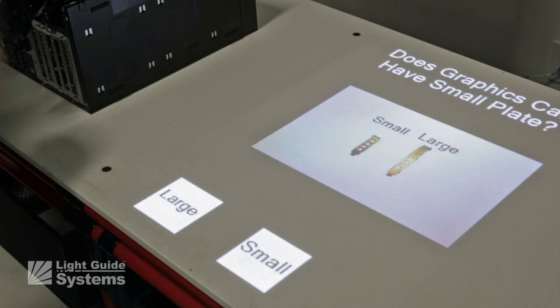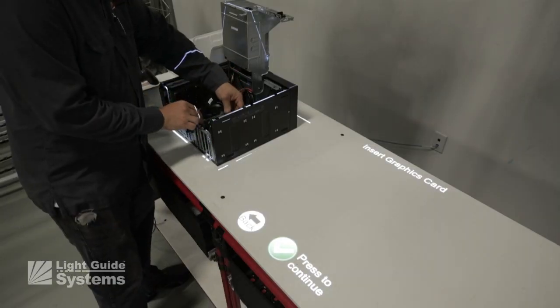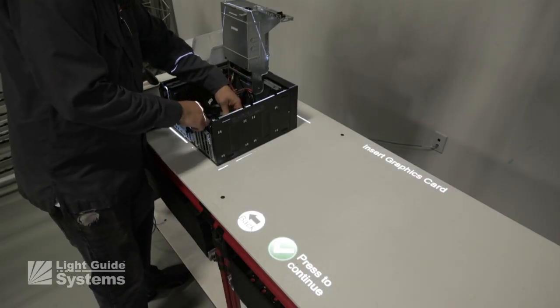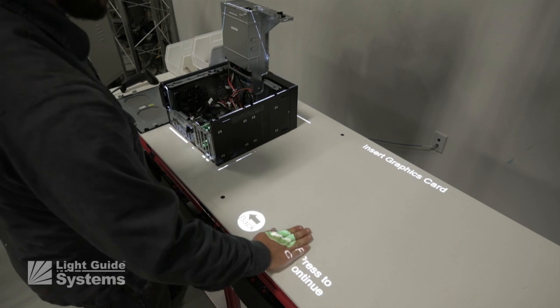Now the technician determines which type of card, small or large, is to be installed and with a soft button selection is guided on the card placement in the machine.